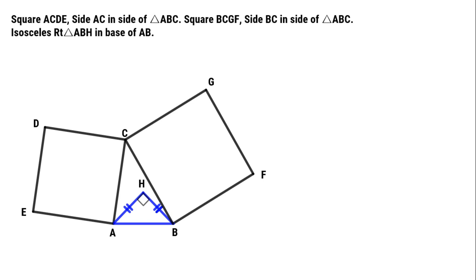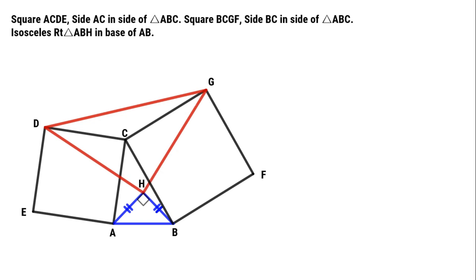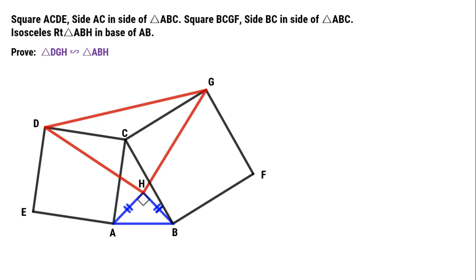Connect DG, then connect DH and GH. We get triangle DGH. The problem is: how to prove triangle DGH is similar to triangle ABH.